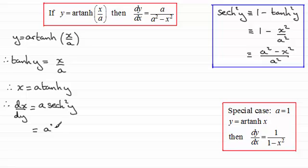So we've got a squared minus x squared, all divided by a. So if we reciprocate this, we therefore have dy by dx equals a all over a squared minus x squared. And that's the result then that we had to show.